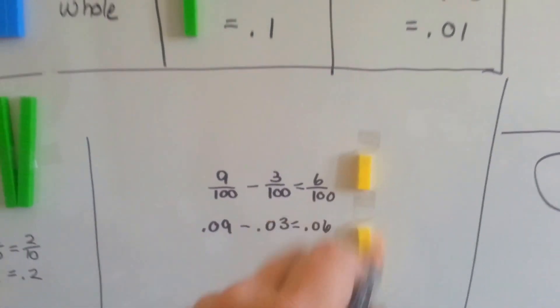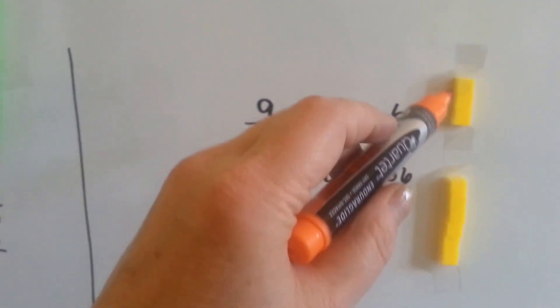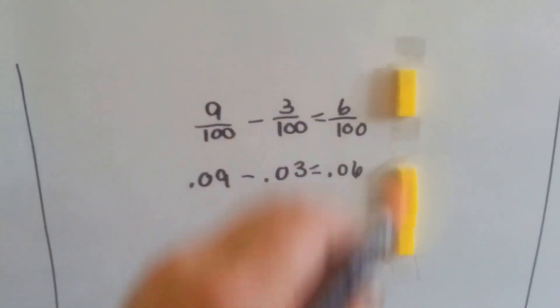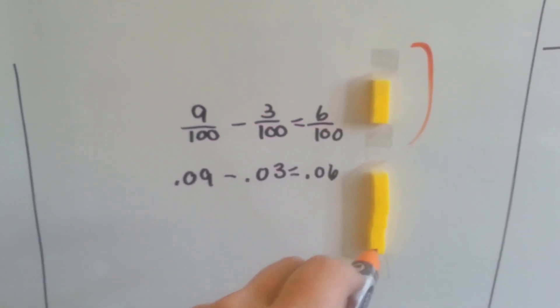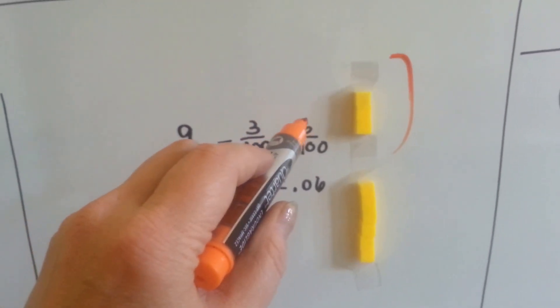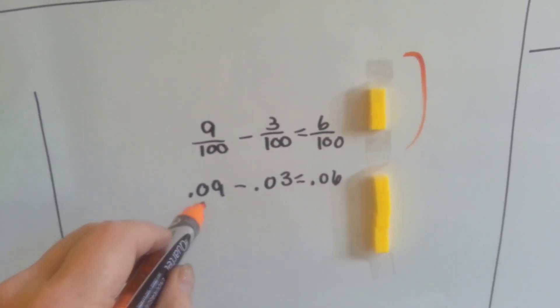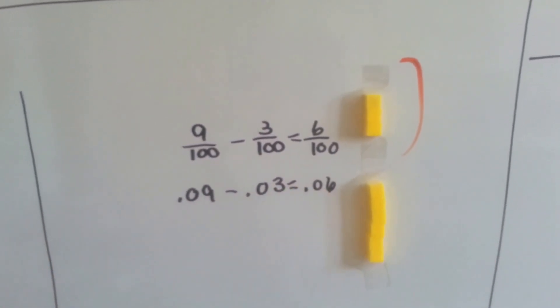Each one of these little yellow ones equals one hundredth. So if we had nine of them, and I took these three away, that would leave just six. Nine one-hundredths minus three one-hundredths equals six one-hundredths.